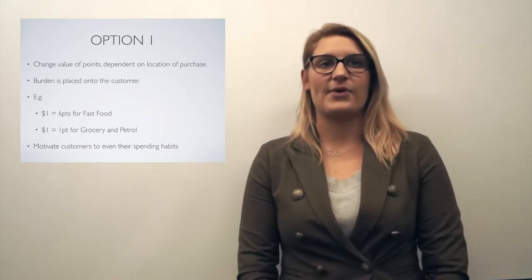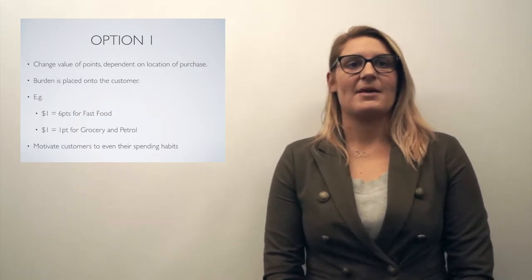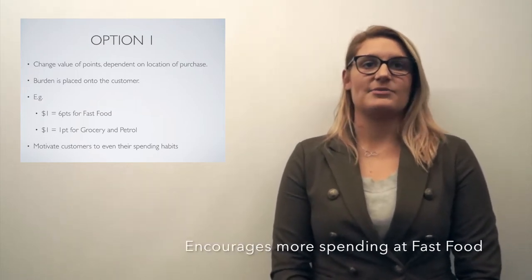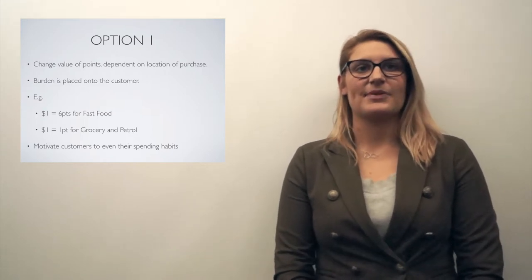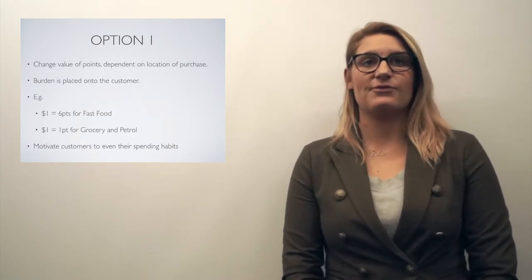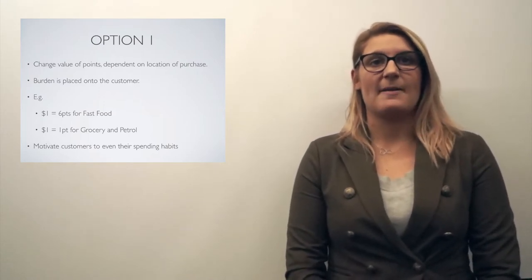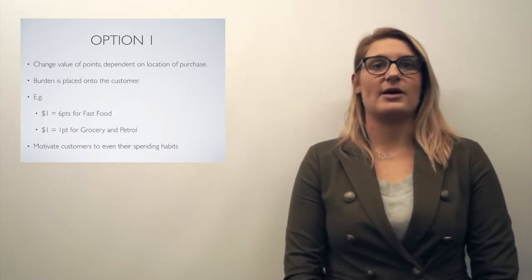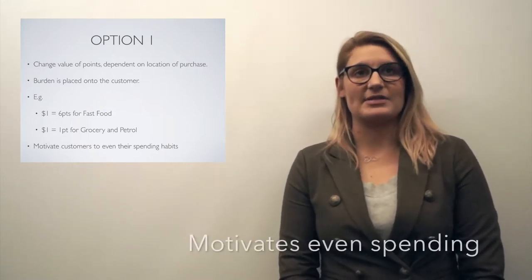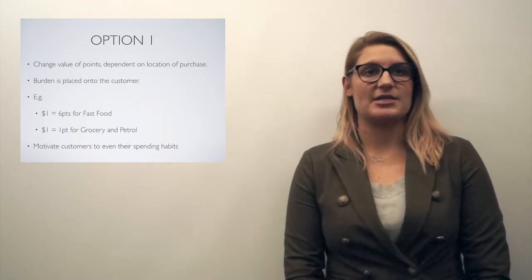We would like to suggest two strategies to tackle the drastic bias currently existing towards the grocery chain. Firstly, Option 1: we propose that altering the value of points would positively impact the level of spending between the chains. By implementing this, we hope to encourage program users to spend more at the fast food chain by rewarding them with more points. With a current sales ratio of 48 to 48 to 4%, we propose that users receive six points to every one dollar spent at the fast food chain, compared to one point per dollar from grocery and petrol. This would motivate users to spend more evenly between the three branches, evening out the cost versus benefit for each department.